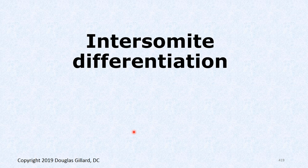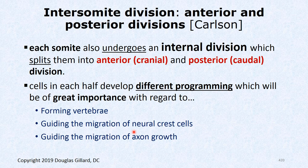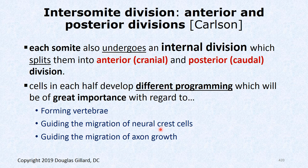Now that we've built the somite, it's going to undergo differentiation. The first thing that happens is each somite cell undergoes an anterior and posterior division — not a visible division, but a biochemical one. Different genes are turned on in these regions, and cells in each half do different programming, creating different types of tissues. This will be relevant when we talk about forming vertebrae, the migration of neural crest cells, and growing axons.